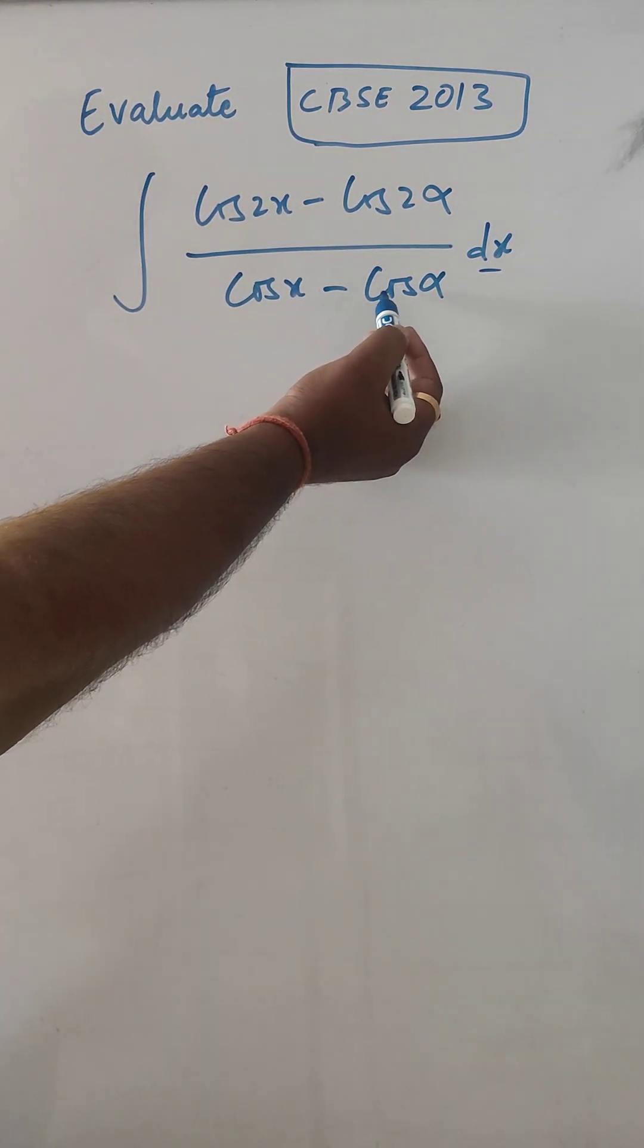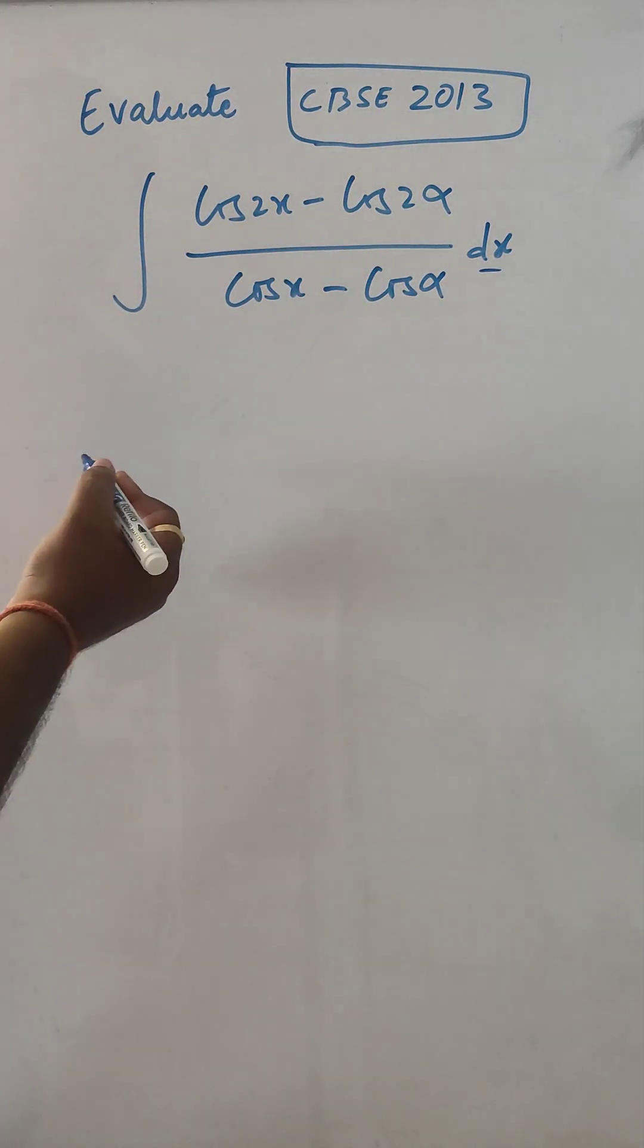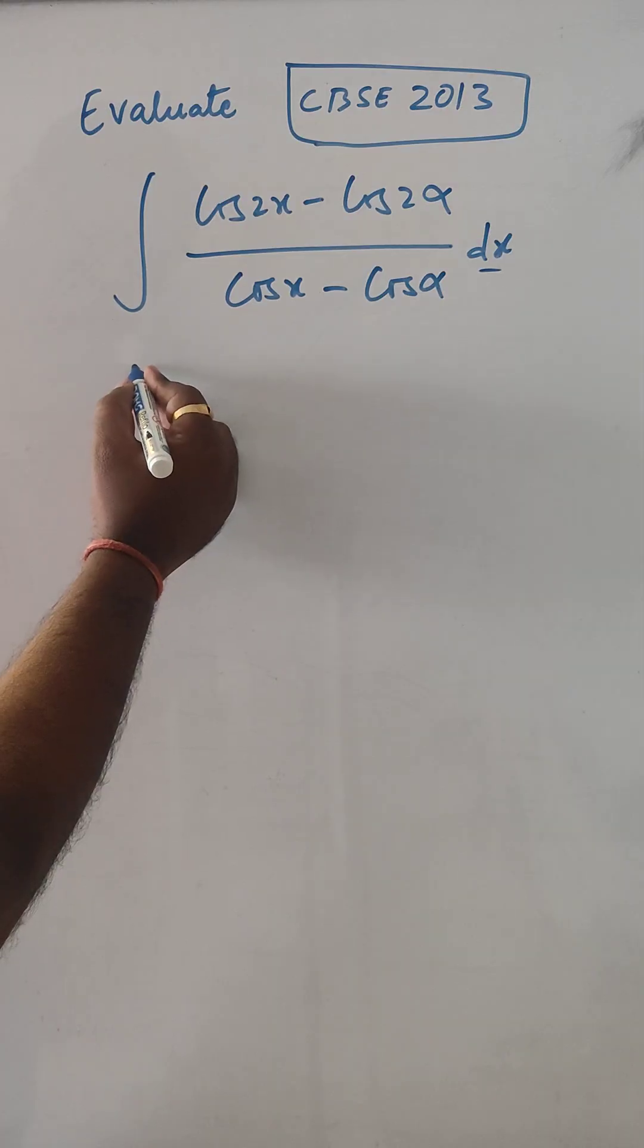We have cos x, cos α, and cos 2α. These are constants. Now, we will proceed with this.